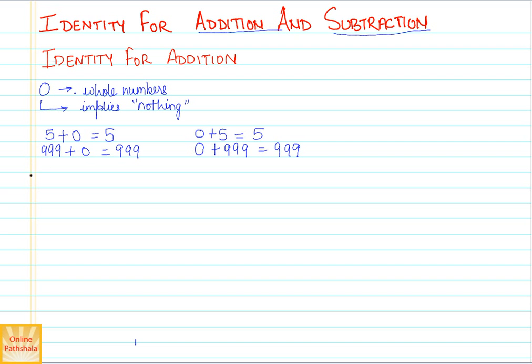We can just summarize this as: adding 0 to a whole number results in the number itself. This is quite an obvious example.